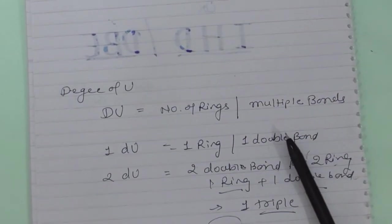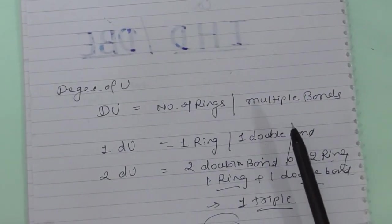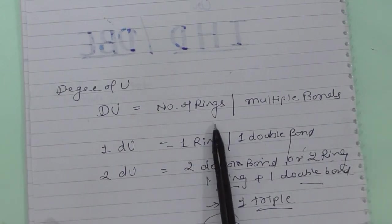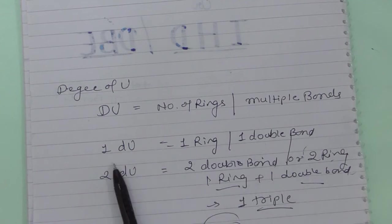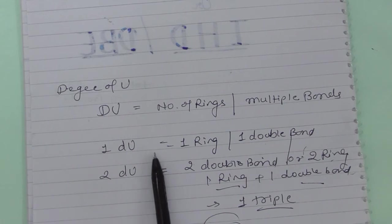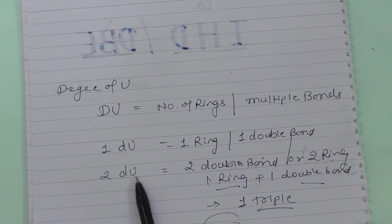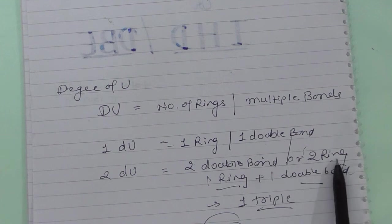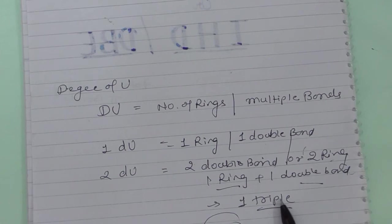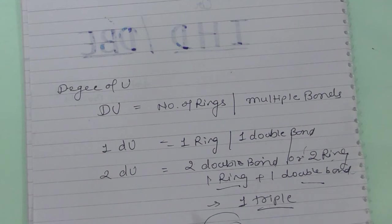Here I will discuss some important points. If the degree of unsaturation is one, that means there is one ring or one double bond. If it is two, there can be two double bonds, two rings, one ring plus one double bond, or maybe one triple bond.